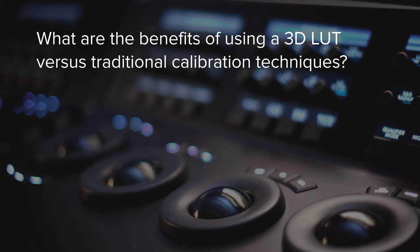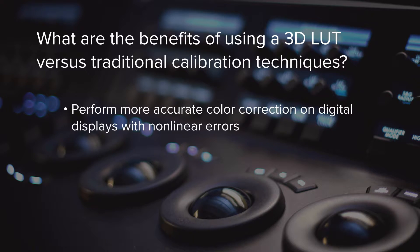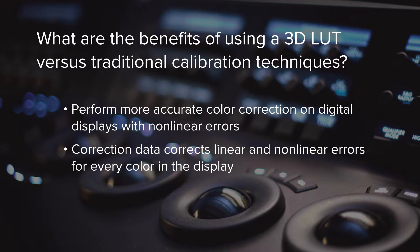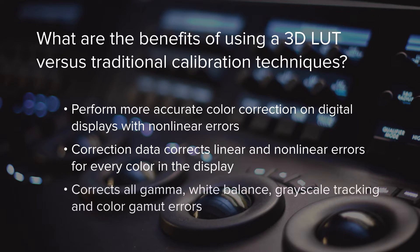Josh explains the benefits of using a 3D LUT versus traditional calibration techniques. Even after all the controls available on a video display or RGB computer monitor have been optimized, every display normally has a number of remaining errors. Modern digital displays have nonlinear errors that are not well corrected without the complex correction abilities of a 3D LUT, which corrects linear and nonlinear errors for every color. The 3D LUT corrects all gamma, white balance, grayscale tracking, and color gamut errors.